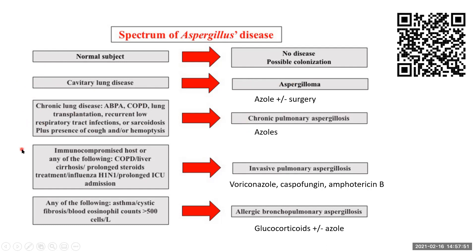As immunity worsens and a patient is an immunocompromised host on prolonged steroids, has cirrhosis, or is a transplant patient on immunosuppressing medications, they tend to get invasive pulmonary aspergillosis, or IPA. The difference between these entities and IPA is that the Aspergillus hyphae are present in the lung tissue, as opposed to being localized in the alveolus. Patients with asthma or cystic fibrosis and a peripheral eosinophil count greater than 500, with specific imaging findings, are considered to have allergic bronchopulmonary aspergillosis, or ABPA. Importantly, aspergilloma does not equal ABPA.